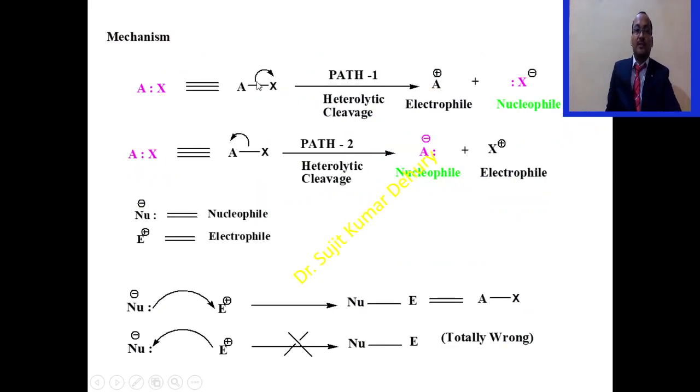This two-headed curved arrow shows the direction of the bond cleavage. That is called heterolytic cleavage. The atom on which this bond is breaking gets both the electrons and negative charge, and the other atom will be positively charged, A plus. This X minus is called nucleophile and A plus is electrophile.